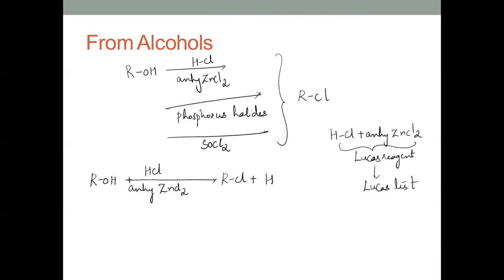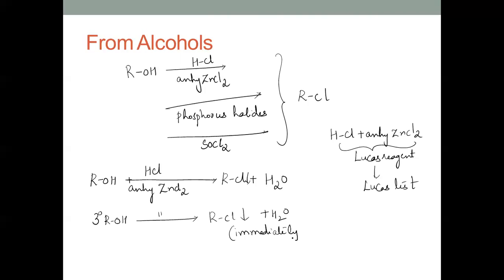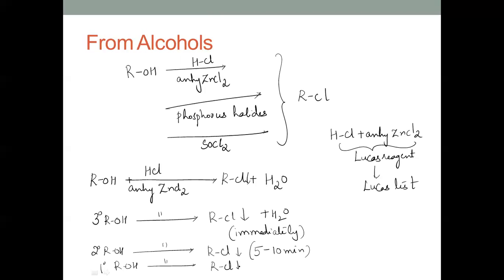In this reaction, we get the alkyl halide plus water, and the white precipitate or turbidity which is formed here is the key indicator. With tertiary alcohols in the presence of the Lucas reagent, turbidity is produced immediately. For secondary alcohols, the turbidity is formed after five to ten minutes.